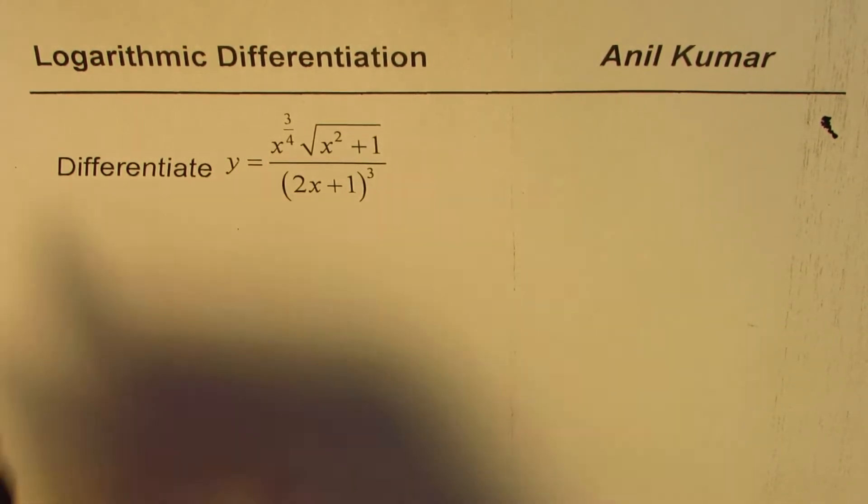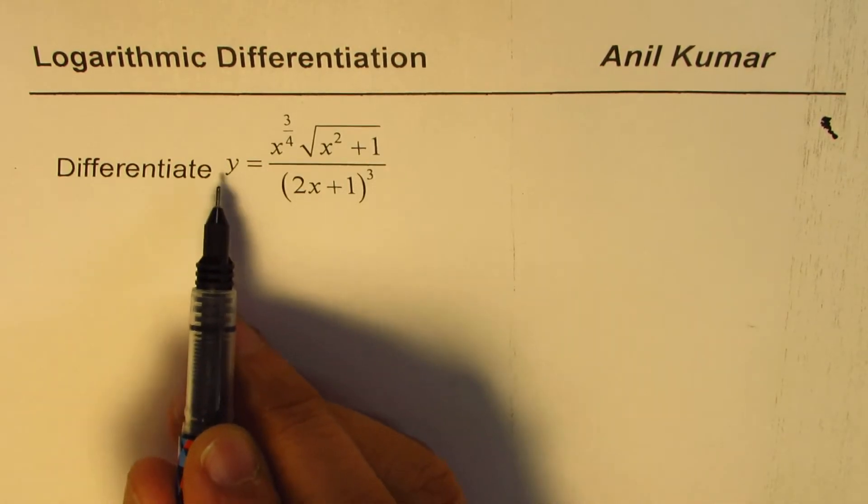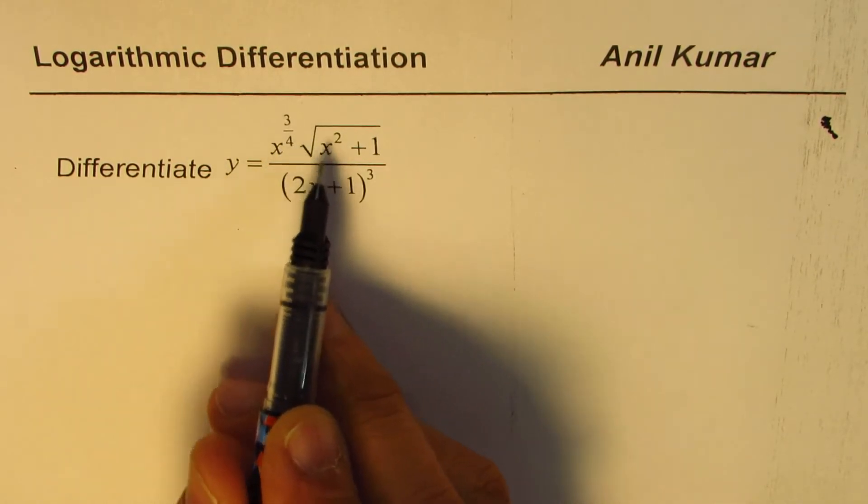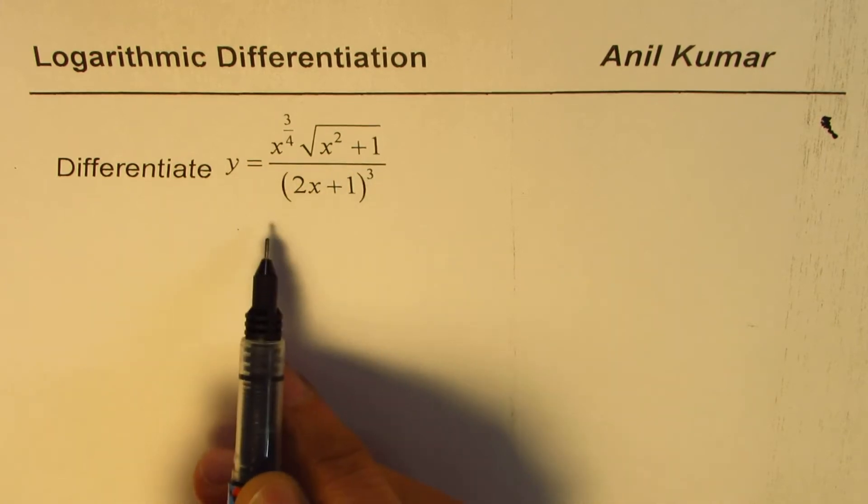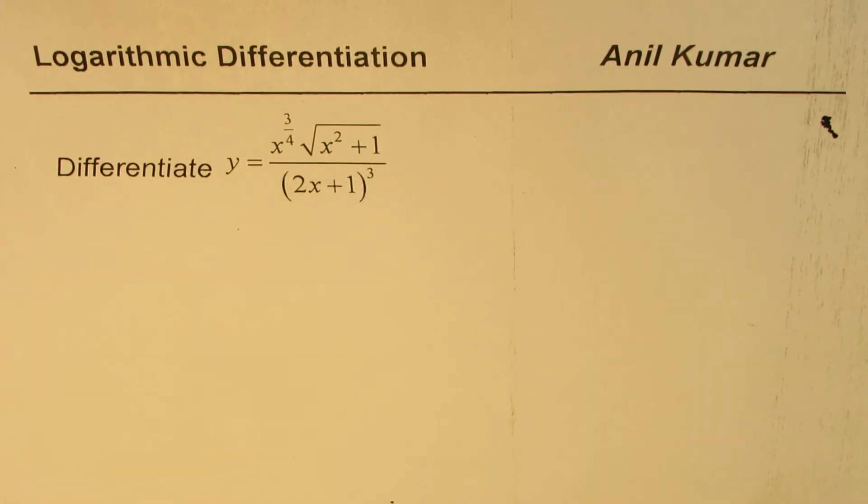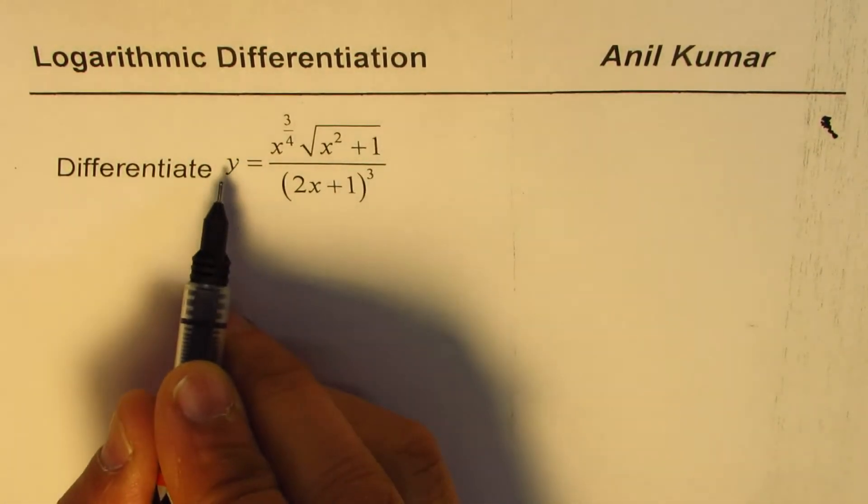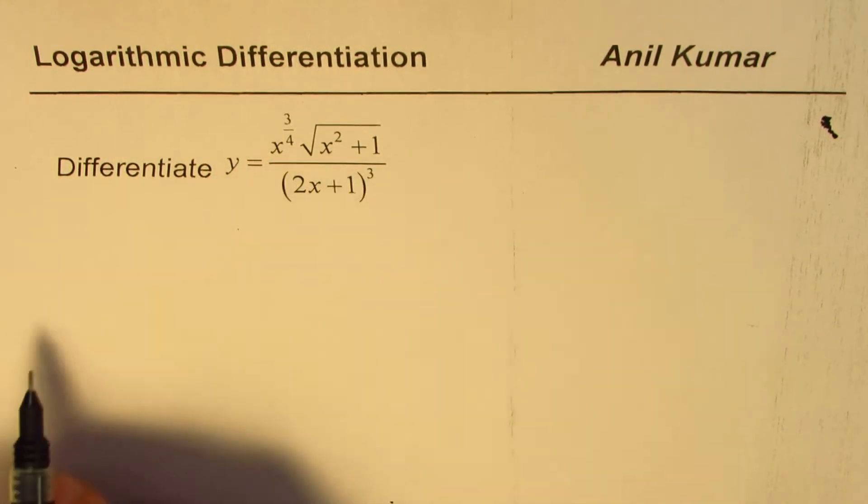We need to differentiate y equals x to the power of 3/4, square root of (x² + 1), divided by (2x + 1) cubed. Now we can take ln (log to base e) of both sides.